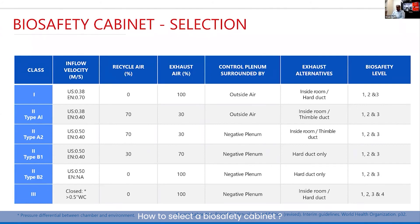In the case of Class 3, it is a completely closed system. The chamber is negative with respect to the outside and 100 percent of the exhaust goes through HEPA filters with proper treatment — sometimes double HEPA filters or a HEPA filter followed by a scrubber. Class 3 is recommended for biosafety level 4, whereas levels 1, 2, and 3 can use any of the other cabinets.